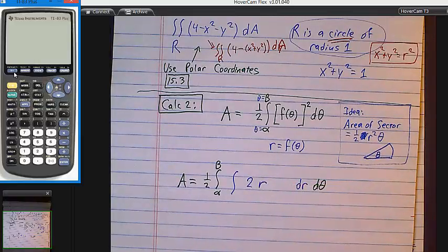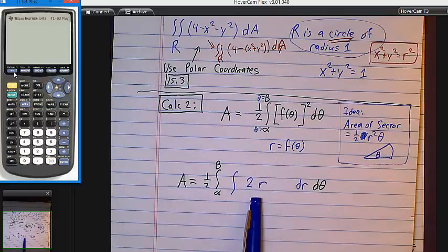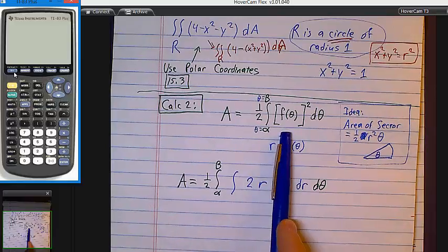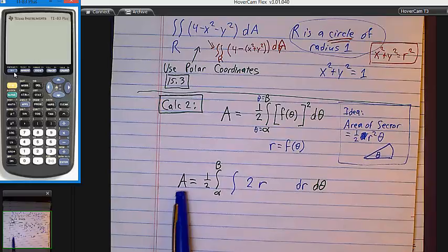Now, wait a minute. Why? Well, because what happens when you integrate 2r? What do you get? r squared, which is f of theta squared. So, I still have an area formula. This says A. You guys with me?